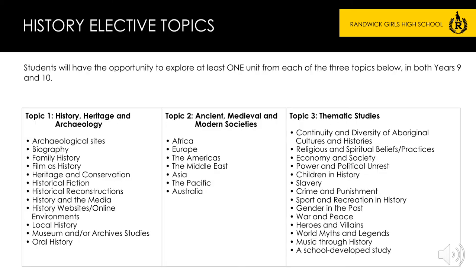History Elective topics. Students will have the opportunity to explore at least one unit from each of these three topics in both years 9 and 10. Topic 1: History, Heritage and Archaeology. Topic 2: Ancient, Medieval and Modern Societies. And Topic 3: Thematic Studies.